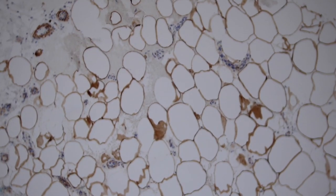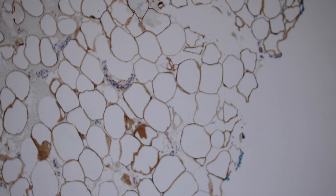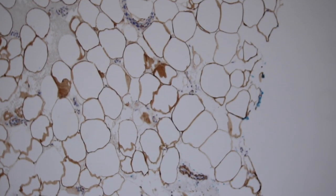And then also fat adipocytes tend to stain with S100 as well. So you can see S100 staining these fat cells here in the subcutis. S100 is not a very useful stain for fatty tumors but it does stain normal fat. And it will stain nerve as well, but I didn't have a good nerve to show in that piece.